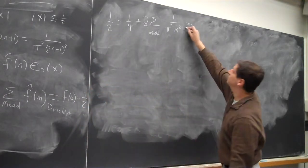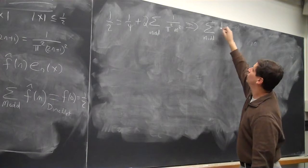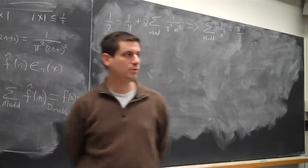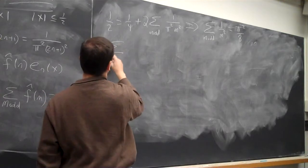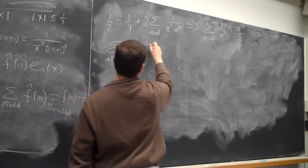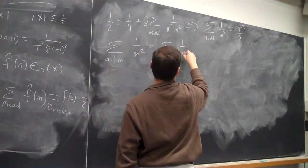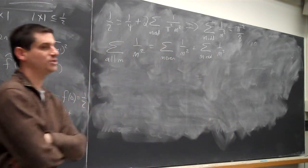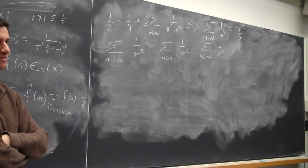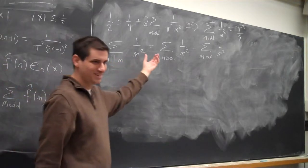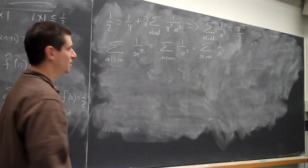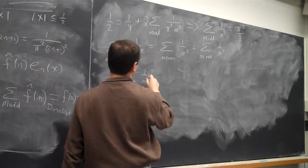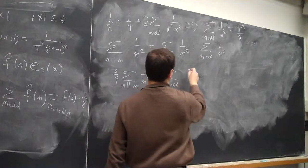Okay, well, one half minus one fourth is one fourth divided by two is one eighth. So we get the sum of m odd, one over m squared, is going to be pi squared over eight. And now we play the exact same game as before. The sum over all m of one over m squared is the sum m even, one over m squared, plus the sum m odd, one over m squared. What's the sum of one over m squared when m is even? A fourth of the sum over all m.